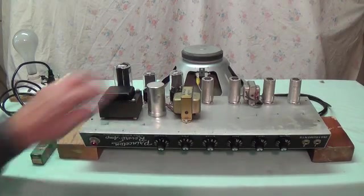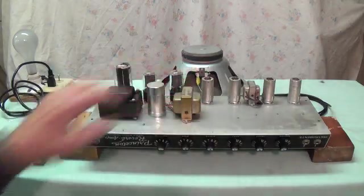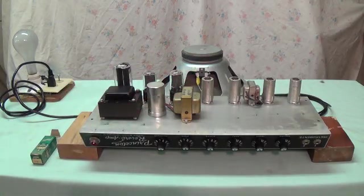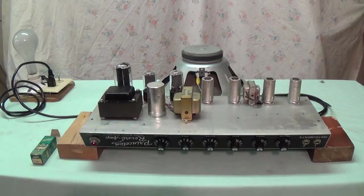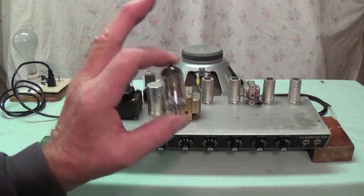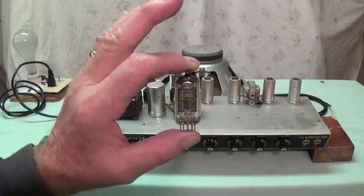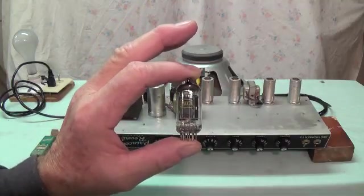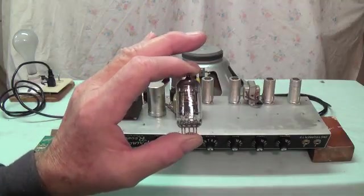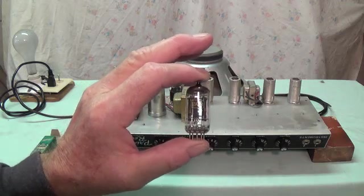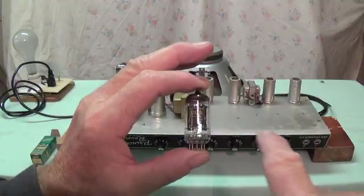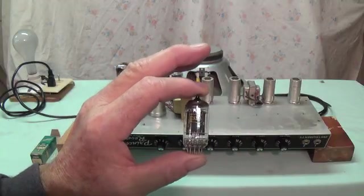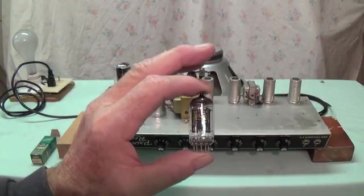While testing the tubes, I found out that this 12AX7 right here had fair output, but nothing real remarkable. So, wanting to do the best I could, I went to my tube stash and found this really nice Raytheon 12AX7 and tested it. And it darn near pegged the meter. Remember, these 12AX7s are really two tubes in one. They're a duo triode, so you have to really test both halves of them.